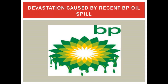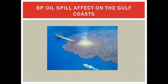The devastation caused by these spills can be learned from the recent spill in the Gulf by BP. In the BP oil spill, more than 200 million gallons of crude oil was pumped into the Gulf of Mexico for a total of 87 days, making it the biggest oil spill in US history. This oil spill affected the coasts of Texas, Louisiana, Mississippi, Alabama, and Florida.